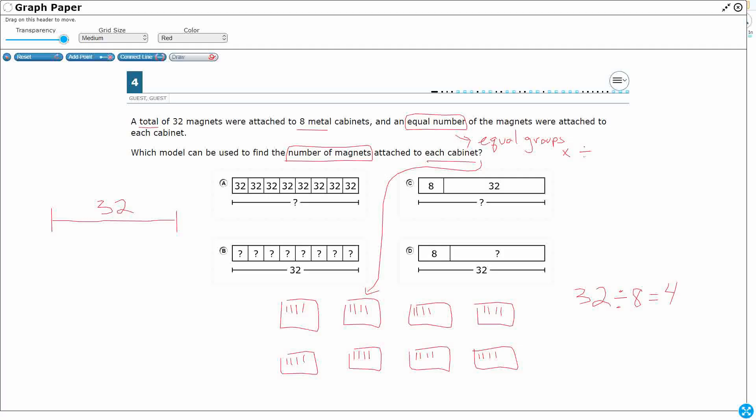I could have also done this. I could have said, okay, eight cabinets times an unknown number of magnets on each cabinet is going to equal 32 magnets. So, either way you look at it, we're looking at four.